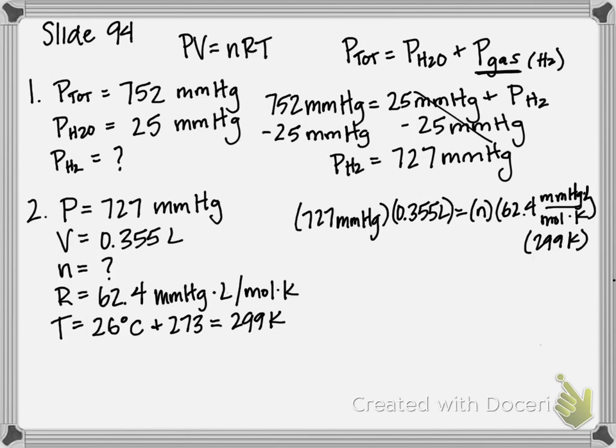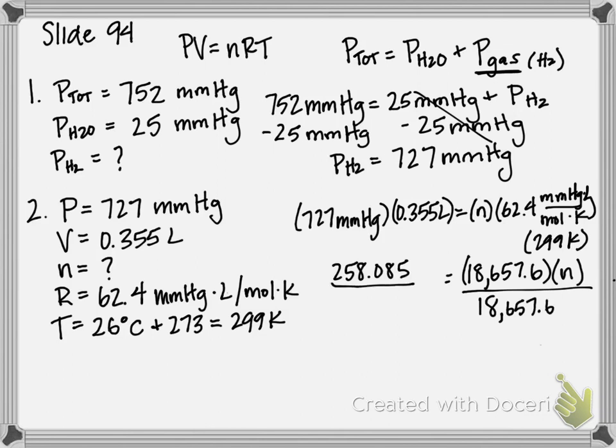So, if I multiply 62.4 times 299, I get 18,657.6 times moles. And if I multiply 727 times 0.355, I get 258.085. So, I'm going to divide both sides by the 18,000 number, so I can get moles by itself. And I get that my moles is equal to 0.0138.